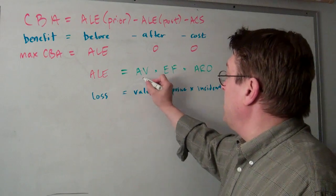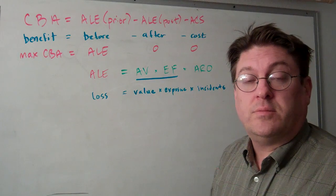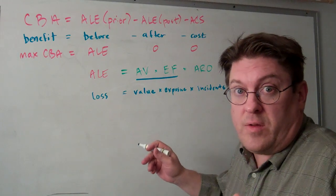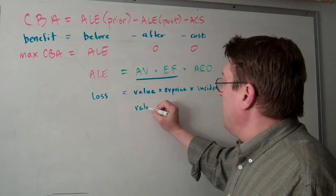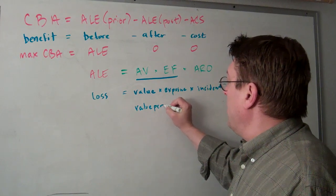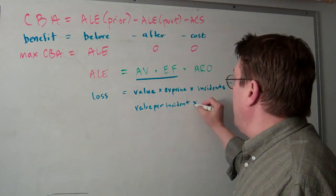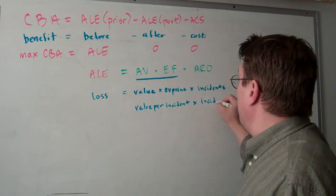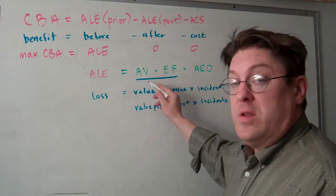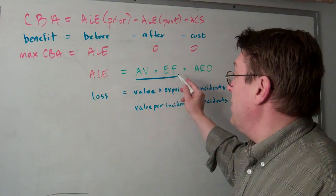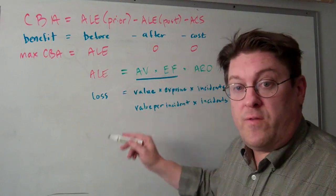What we're trying to do is say that this could be one number—AVEF, call it. It's basically the value per incident times the incidents. We don't need to know the asset value or the exposure factor separately. We can just count this as one figure.